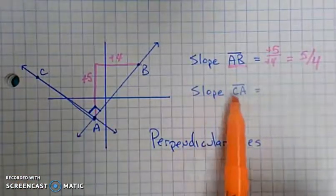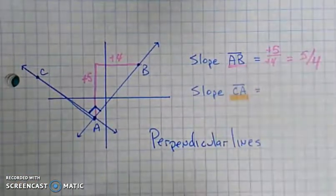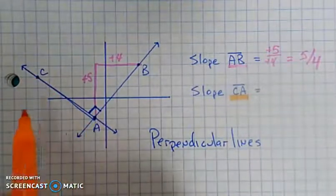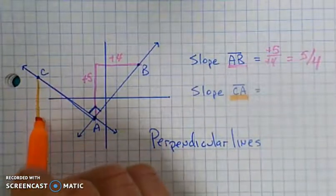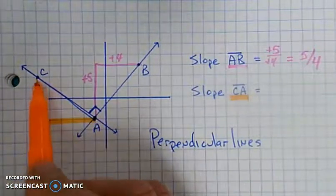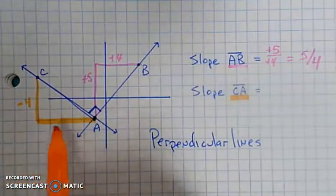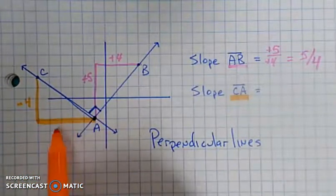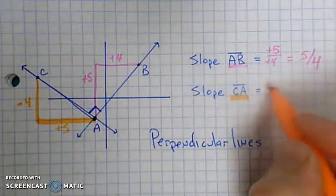On the other hand, if I try to find the slope of CA, so I start at C and go over to A, this one is definitely going down. And then over. So how much did it go down? It went down 1, 2, 3, 4. That's minus 4. And over 1, 2, 3, 4, 5. So you recognize a lot of the same numbers.